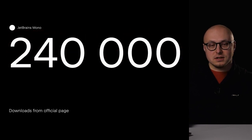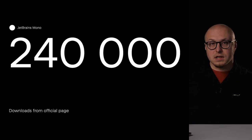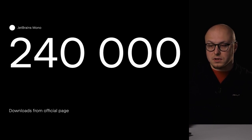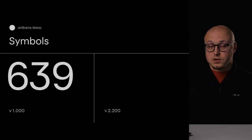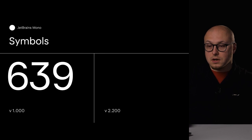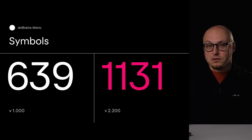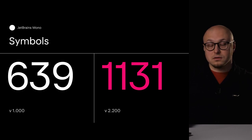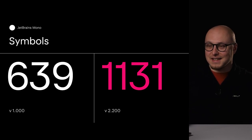The next figure is the number of downloads from our official landing page — 240,000. Unfortunately, we can only track official downloads from the landing page with Google Analytics. We cannot see how many people actually downloaded the typeface from GitHub, from AUR, or through other sources such as Brew. In the first version of JetBrains Mono there were 639 symbols, but in version 2.200, which we recently released, there are 1,137 symbols and that figure is growing, thanks to my friend and colleague Stas who joined me.